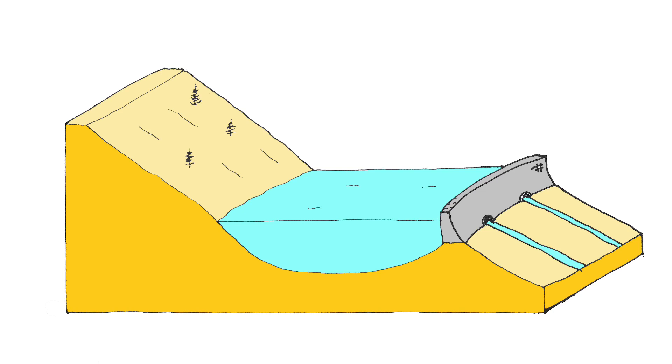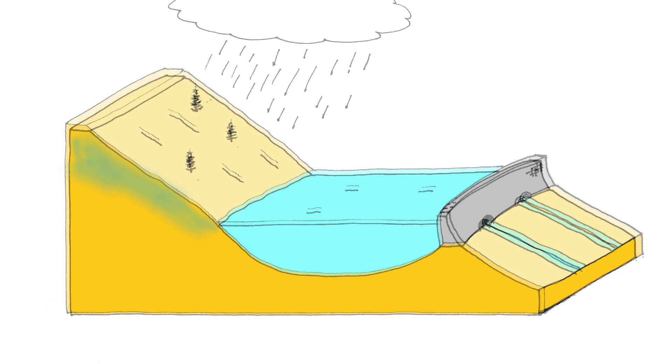In this landscape, we have a hill above a lake and in front of the lake we have a hydropower plant. The soil in the hill is moist, but not saturated.